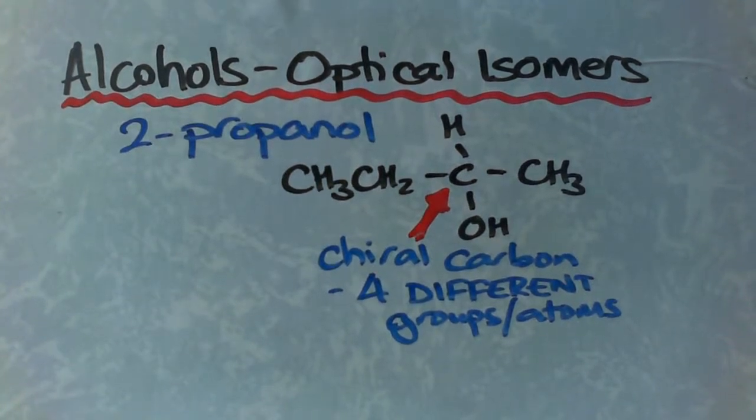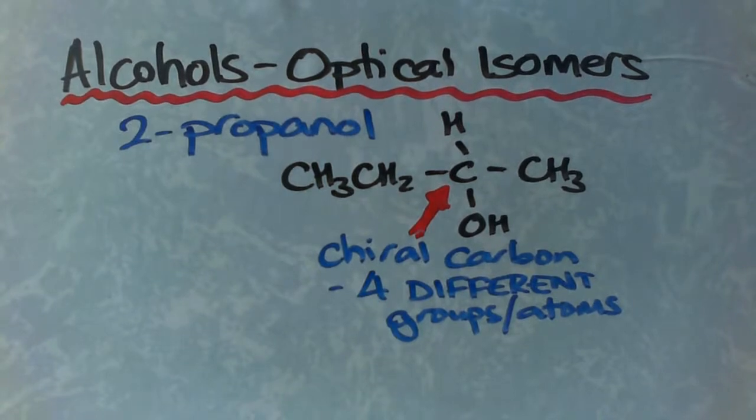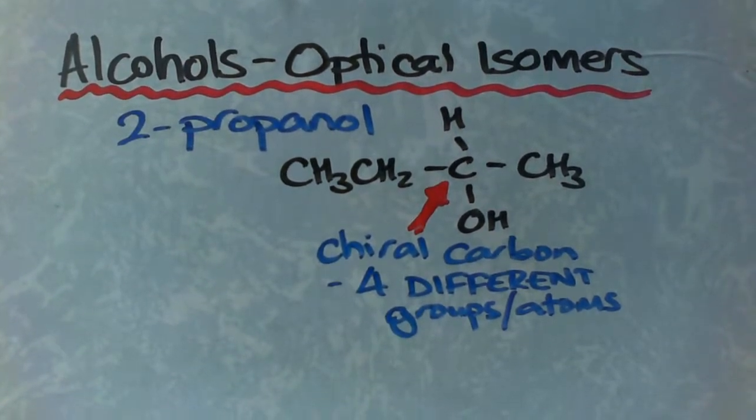While we are looking at the structures of alcohols, you might have noticed that there were two ways to make 2-propanol. We call these optical isomers or enantiomers.